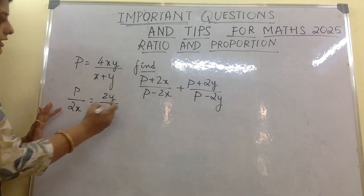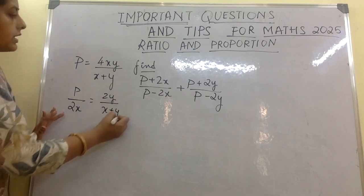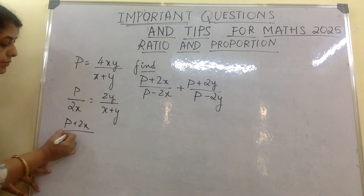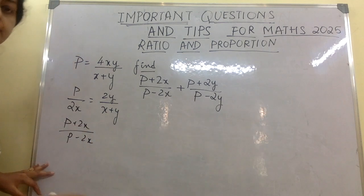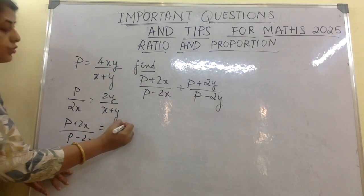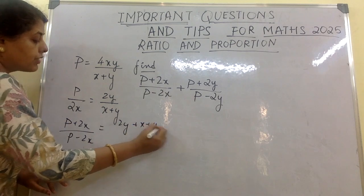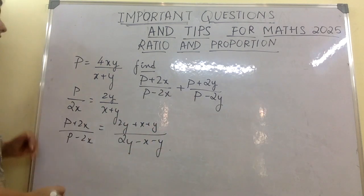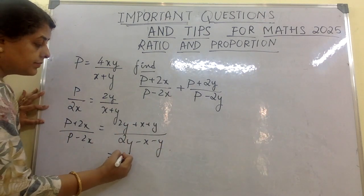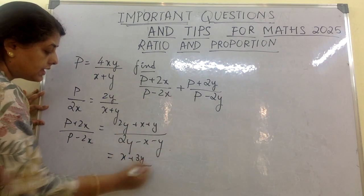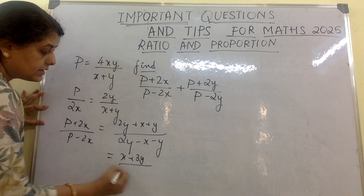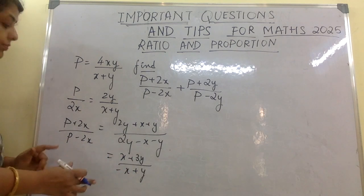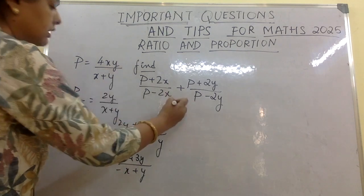That gives us 4xy / (x+y). Now applying componendo and dividendo on p/2x: (p + 2x)/(p − 2x) = (2y + x + y)/(2y − x − y), which gives (x + 3y)/(−x + y).